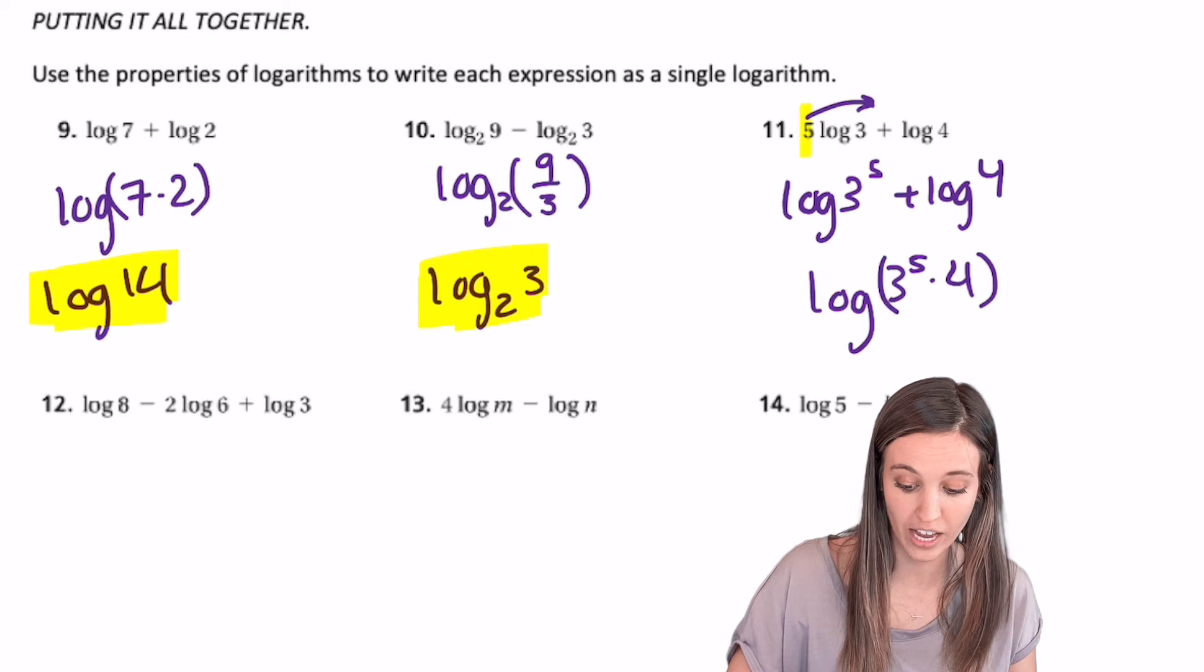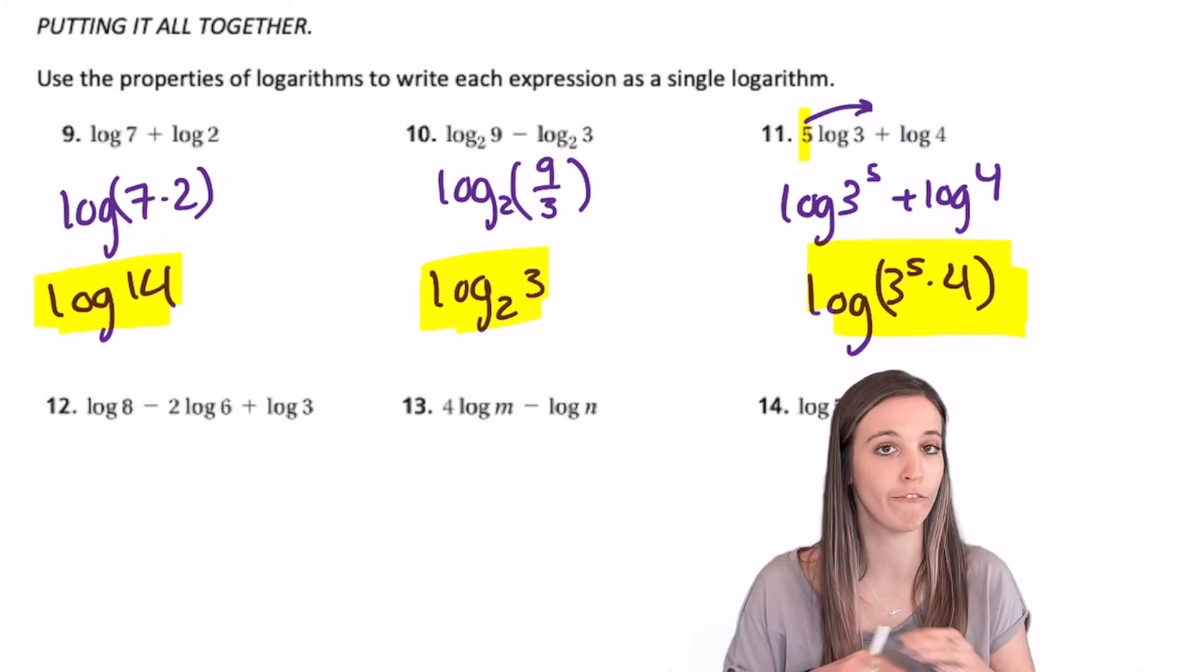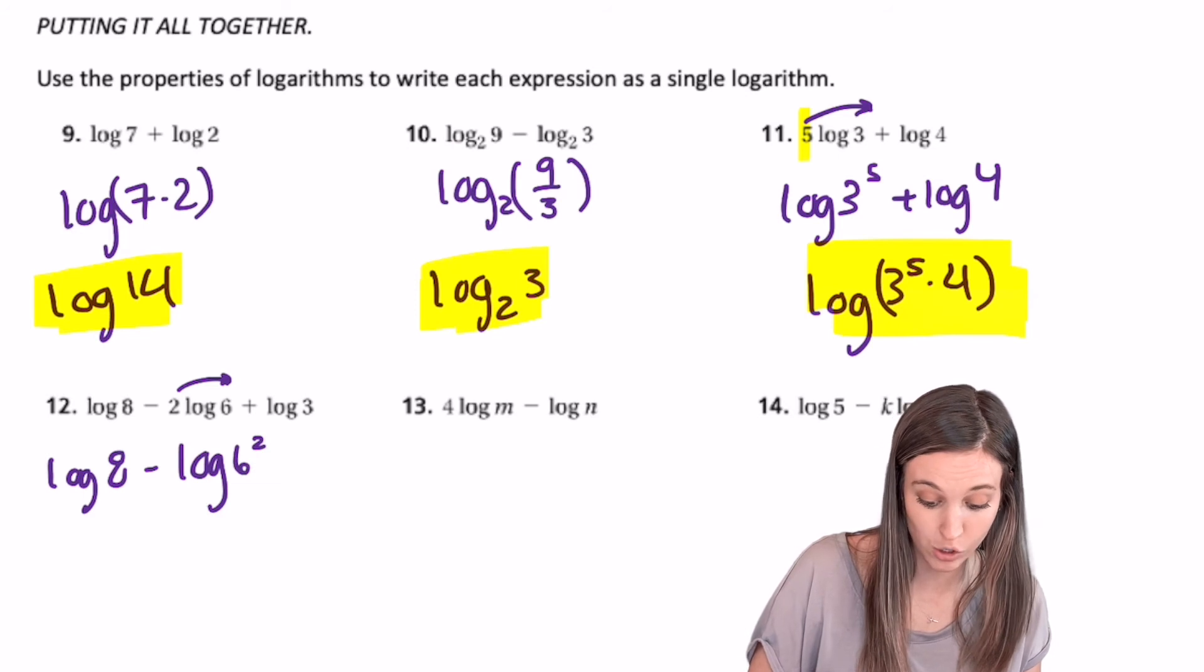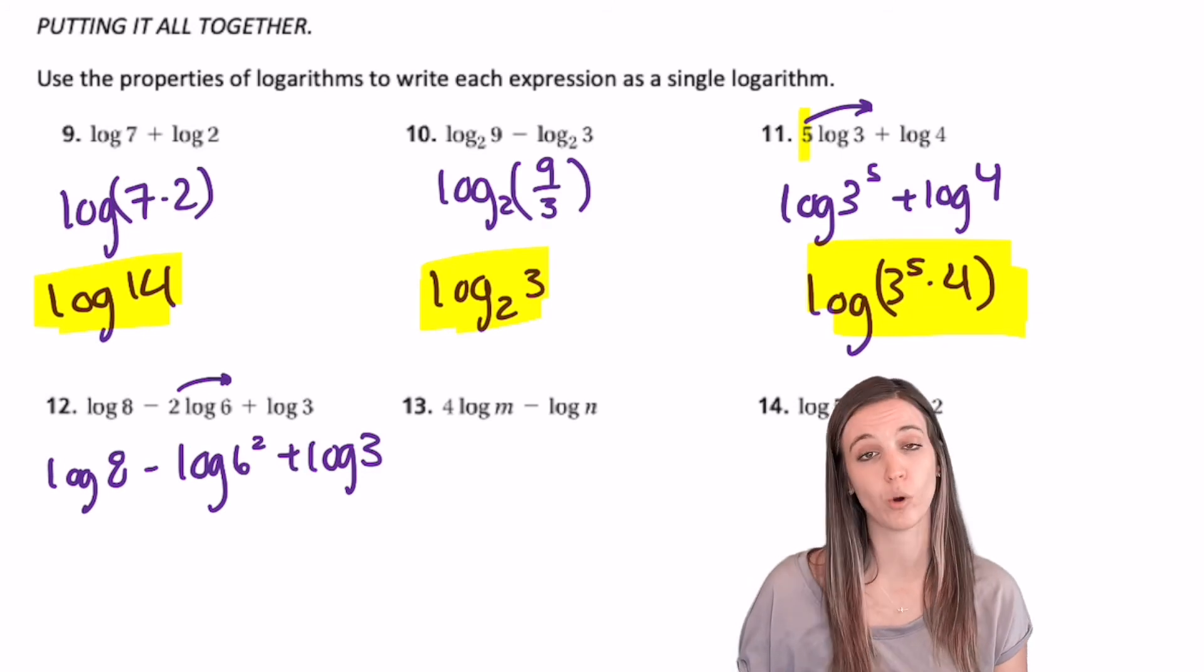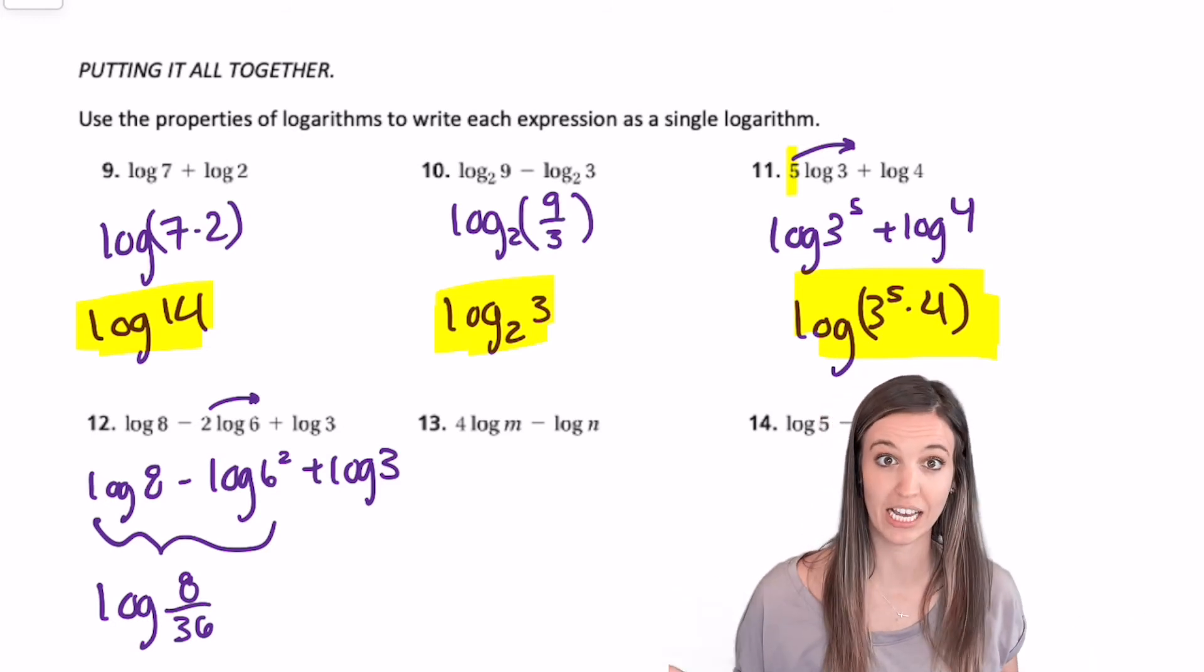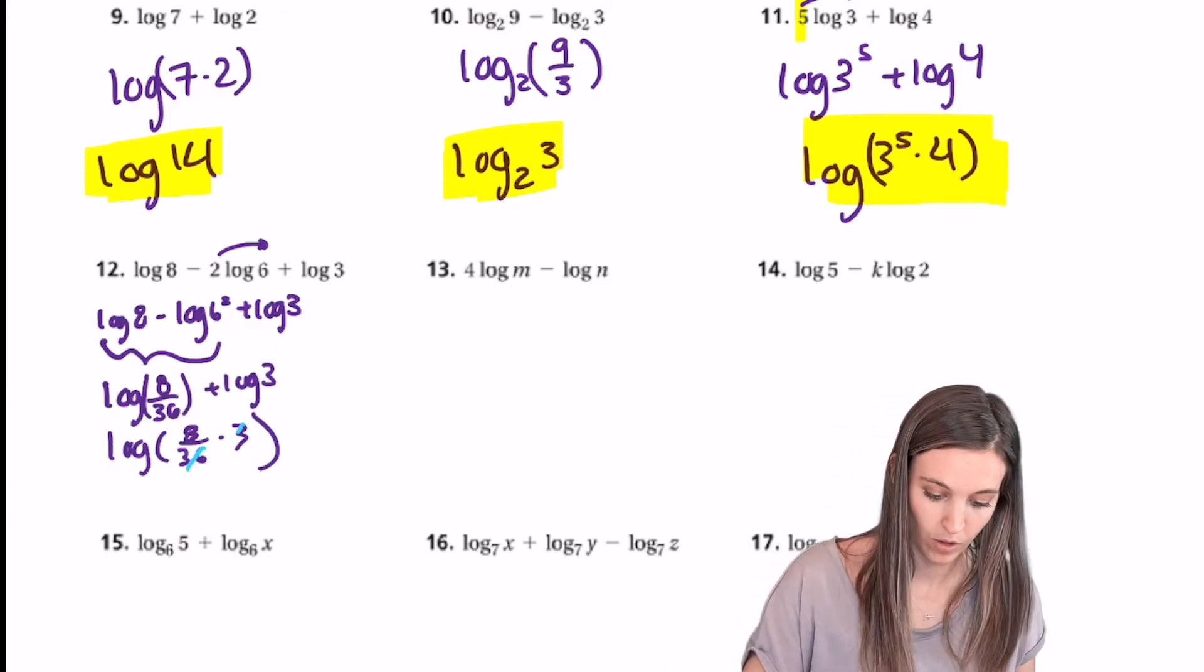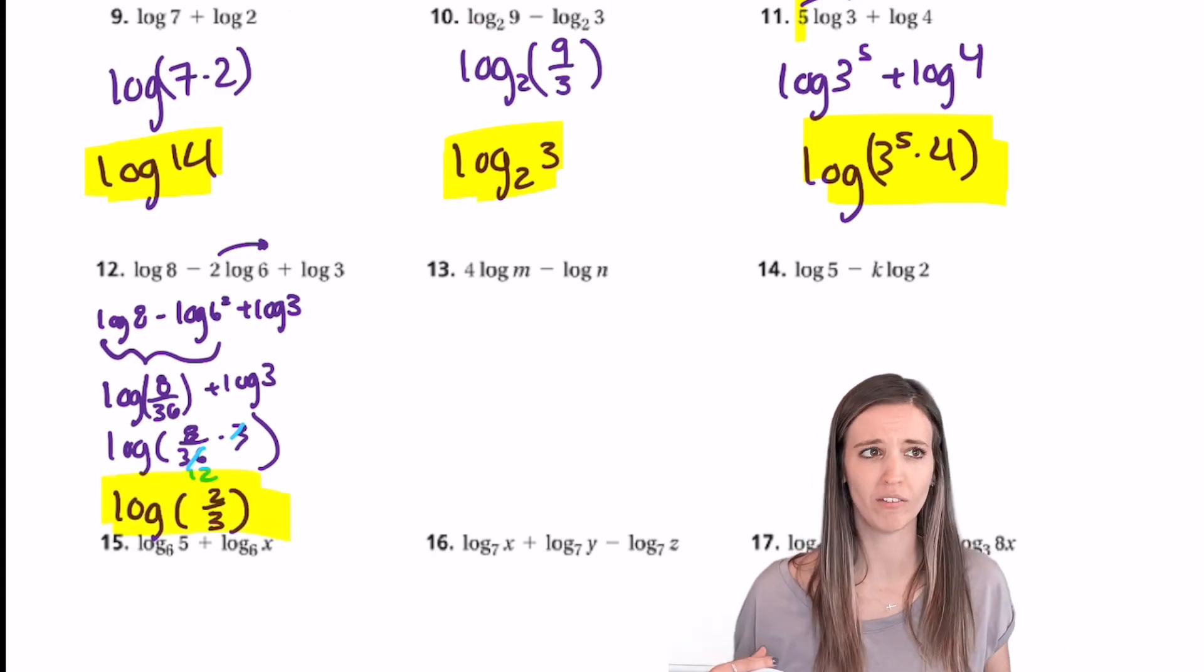Looking at 12, here I've got 3 logs now, so we need to be careful. First rule of thumb is we've got to do power property, take care of anything that's in front of our logs so we can use product and quotient property. So log of 8 minus log of 6 squared, we know that's 36, plus log of 3. Now we want to bring all these logs together. Let's always work from left to right. So using quotient property, I can bring log of 8 minus log of 36 together into log of 8 divided by 36, plus log of 3. And then I'm bringing those two together using product property, multiply. Well, I can divide out a 3, which leaves me with log of 8 divided by 12. Well, 8 divided by 12 is 2 thirds.